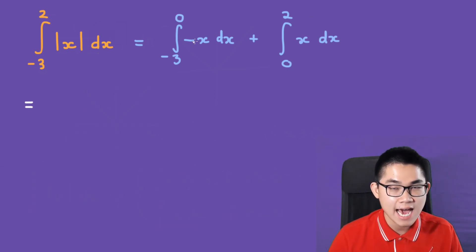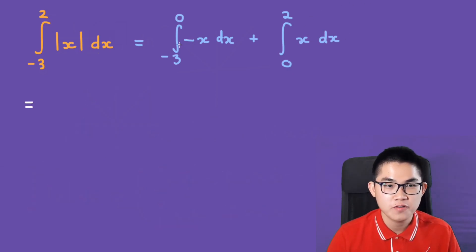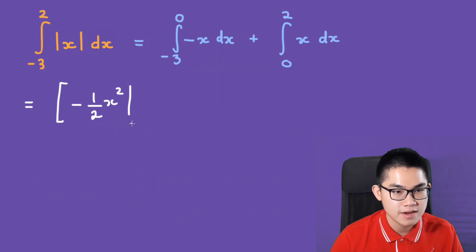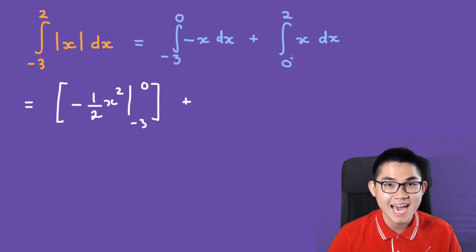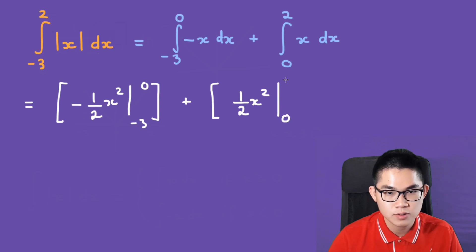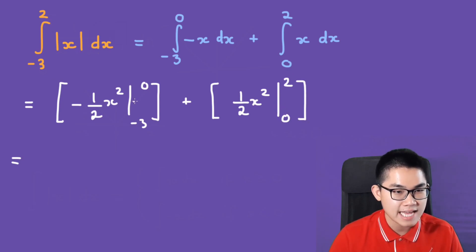Now, what is the antiderivative of negative x? It's going to be negative 1 over 2 x squared, from negative 3 to 0. And then, what is the antiderivative of positive x? Well, it's going to be positive 1 over 2 x squared, from 0 to 2. So, that's how you would write it.